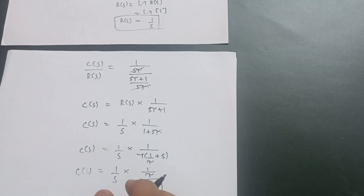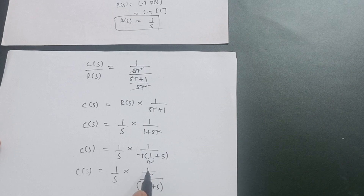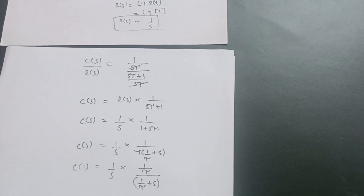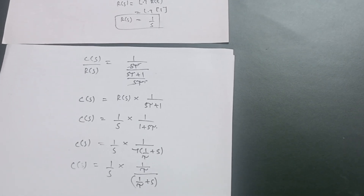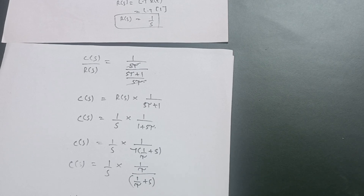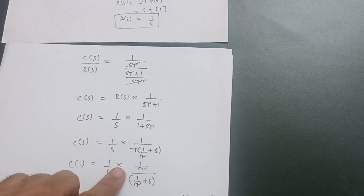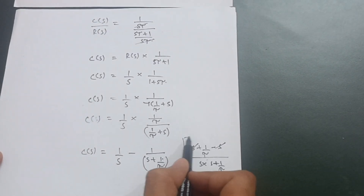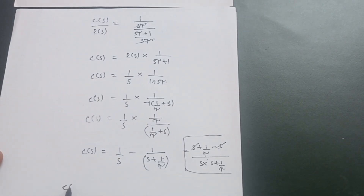In order to apply the inverse Laplace, we need to express C(S) in partial fraction form as A/S + B/(S + 1/τ). This gives C(S) = 1/S − 1/(S + 1/τ). We can verify: multiplying out, S·(S + 1/τ) in the denominator, and the numerators check out correctly to recover (1/τ)/(S·(S + 1/τ)).